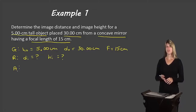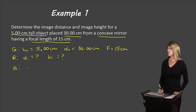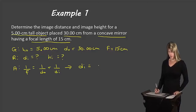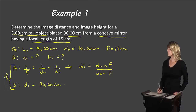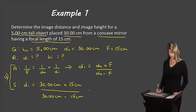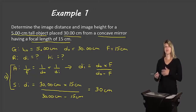For Part A, we'll use the mirror equation: 1/F = 1/DO + 1/DI, rearranged so that DI = (DO × F) / (DO − F). Substituting, DI = (30.00 cm × 15 cm) / (30.00 cm − 15 cm), which gives us 30 centimeters. We use two significant digits because 15 only has two significant digits.